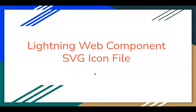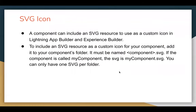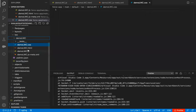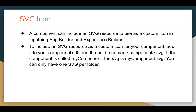Let's understand the SVG icon file of a lightning web component. A component can include an SVG resource to use as a custom icon in Lightning App Builder and Experience Builder. To include an SVG resource as a custom icon, add it to your component's folder. It must be named component.svg — if the component is called myComponent, the SVG file is myComponent.svg. You can only have one SVG per folder. Right-click in the folder to create the file and write the SVG code inside it.